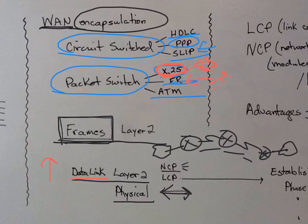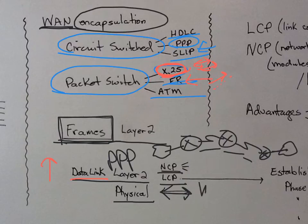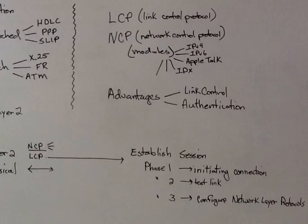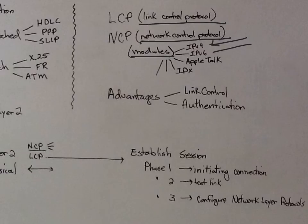Then we get into talking about PPP. Here at the data link and physical layer, we have link control protocol and network control protocol. One communicates this way and the other communicates this way. Network control protocol has modules — what we use typically now would be either IP version 4 or IP version 6. If somebody came up with a new type of network protocol, that module could just be added.